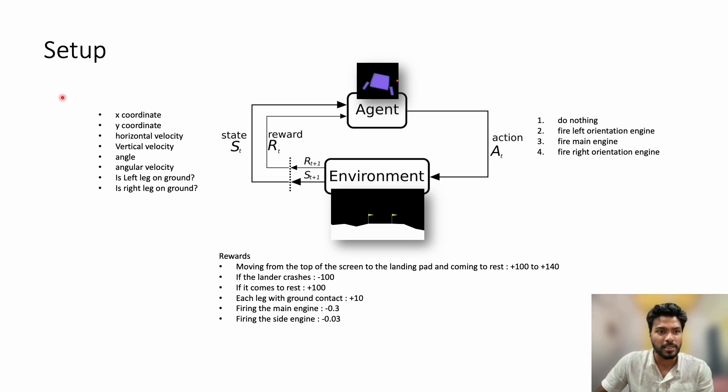The state space consists of the x and y coordinates, the horizontal and vertical velocities, the angle, the angular velocity, and two Boolean variables saying whether the legs are on the ground.